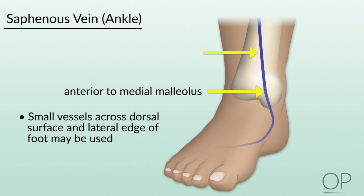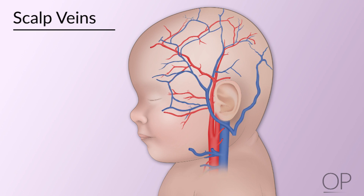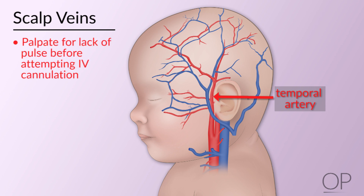For infants, scalp veins can be a great resource, particularly in those who are difficult to locate other veins. These veins run along the forehead and behind the ear. A point of caution: the temporal artery can often look like a large vein and runs in front of the ear. Be sure to palpate to make sure you don't feel a pulse before attempting to cannulate. The direction of a scalp vein in terms of valves always runs away from the top of the head.